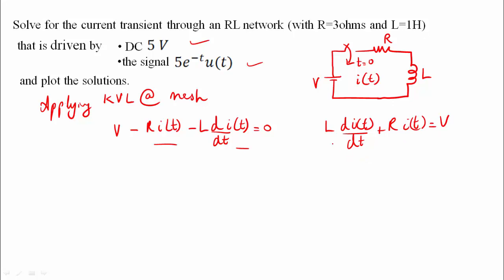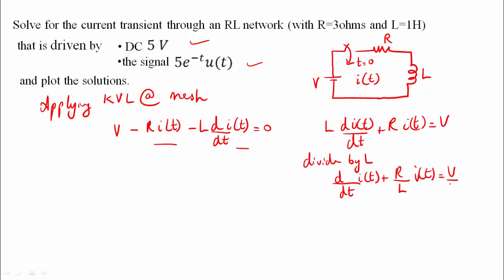Dividing by L, we get: d/dt of I of t plus R divided by L times I of t is equal to V by L. This is our first-order differential equation.